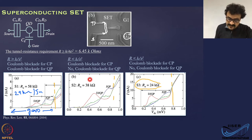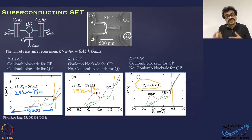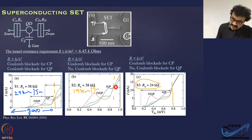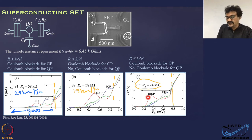Now when you reduce the resistance to 38 kilo-ohm — approximately 19 kilo-ohm per junction — you get stronger sub-gap features because reduced junction resistance enhances the Josephson tunneling effect. But you have almost lost the charging effects of quasiparticles, because your resistance requirement is not satisfied — you have only 19 kilo-ohm per junction whereas you need 25 kilo-ohm per junction to have strong charging effects of quasiparticles. The DJQP and JQP features become even stronger.